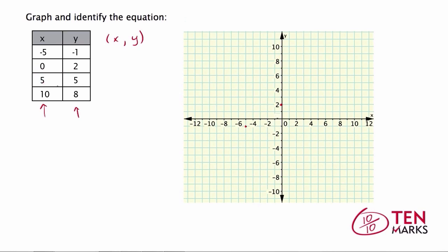Now go to the next point: (5, 5). So when x equals 5, y equals 5. Go over 5 units to the right: 1, 2, 3, 4, 5. Now 5 units up: 1, 2, 3, 4, 5. And here's your point (5, 5). Lastly you have the point (10, 8). So when x equals 10, y equals 8. Go to 10 on the x-axis and 8 on the y-axis. Now connect these four points with a straight line — there's our straight line connecting the four points from the input-output table.